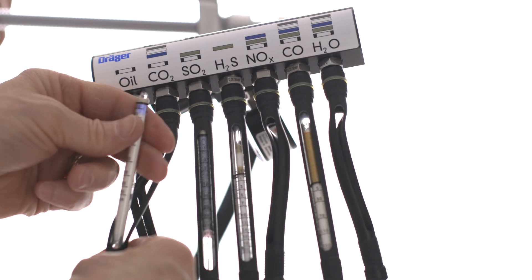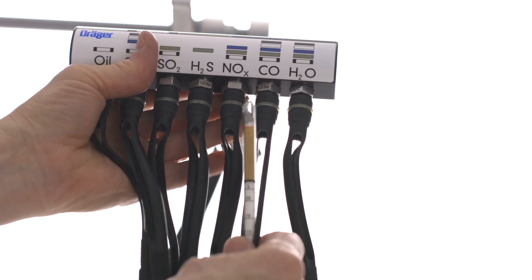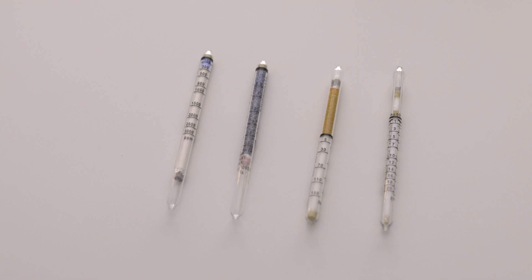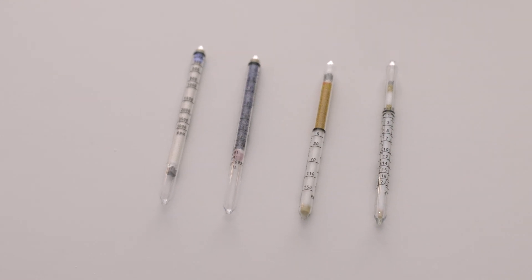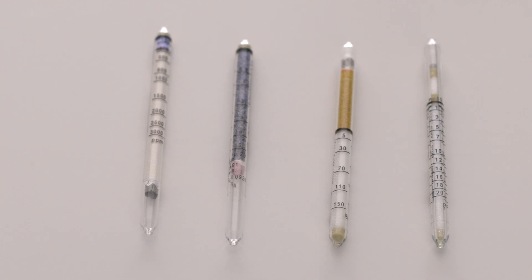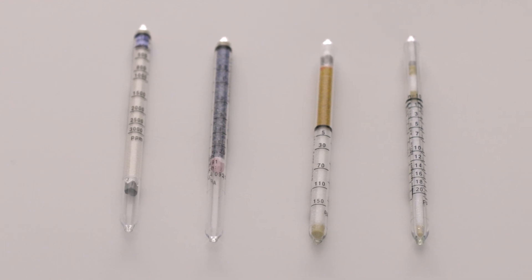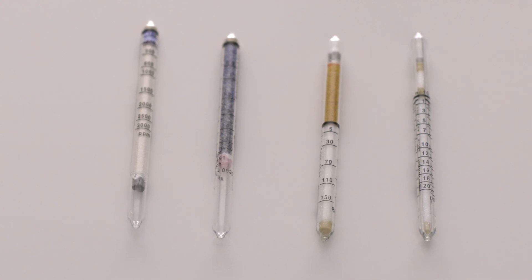remove the impactor, carbon dioxide, sulfur dioxide, hydrogen sulfide, and carbon monoxide tubes. The discoloration on the carbon dioxide tube reached 270 ppm, but there are no visible discolorations on the indication layers of the sulfur dioxide, hydrogen sulfide, and carbon monoxide tubes.